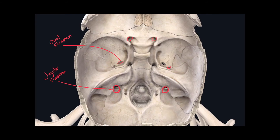The last space that we never identified in the past videos is called the foramen lacerum. It is made up by the petrous part of the temporal bone as well as parts of the sphenoid bone.